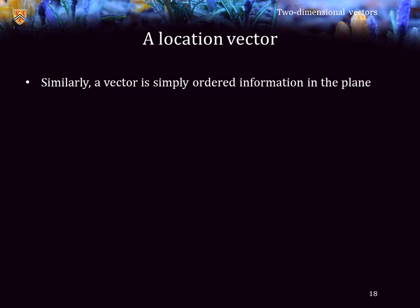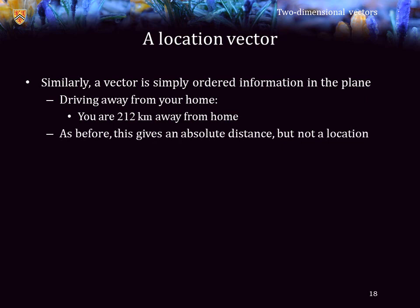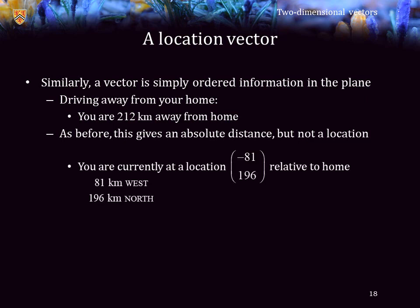Similarly, a vector is simply ordered information, for example, in the plane. Suppose I'm driving away from home. I'm 212 kilometers away from home. Again, this is an absolute distance, but it does not give a location. Instead, assume I am at this location relative to home. What does relative to home mean? That means that home is the zero vector. And so now, I am traveling 81 kilometers west and 196 kilometers north.